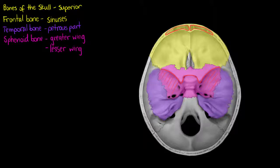The lesser wing being the more anterior of those two components. And if we remembered from our anterior view we could see part of the greater wing in our optic cavity.